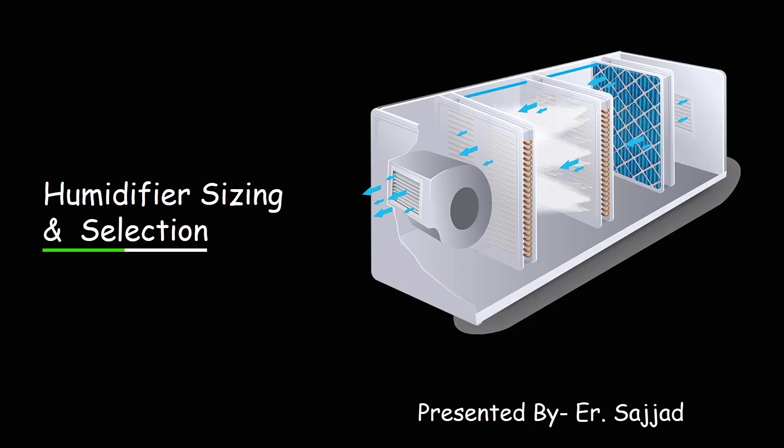Welcome back to the new lecture. In this lecture we'll discuss humidifier sizing and selection. First of all, you have to know what a humidifier is. A humidifier is a device that increases moisture and humidity in the air by releasing water vapor or steam. Humidifiers are commonly used in environments where the air becomes dry, which can lead to discomfort such as dry skin, irritated nasal passages, or respiratory issues.